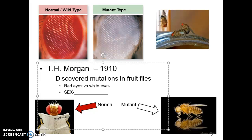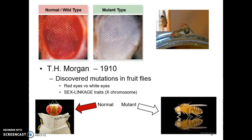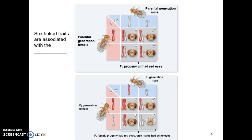Morgan discovered the association with what we call sex-linked traits — traits that are specifically found on the X chromosome, only on the X chromosome of the 23rd pair. Sex linkage is very specific to that X chromosome; we're not worried about chromosome pairs 1 through 22. In humans, we focus on chromosomal pair 23, which determines your gender. Sex-linked traits are associated with the X chromosome — that is critical for understanding how these problems work.